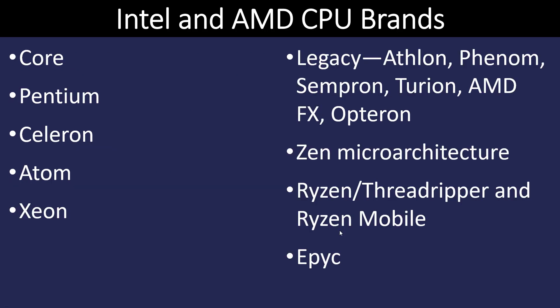For IT fundamentals, you should become familiar with the names. On the Intel side, we have Core, Core 2, Pentium, Celeron, Atom, and Xeon. Xeon is high-end for servers that you may not see in personal computers, but you will find those in servers. On the AMD side, they have Athlon, Phenom, Sempron, Turion, AMD FX, and Opteron. They use something called a Zen proprietary micro-architecture.